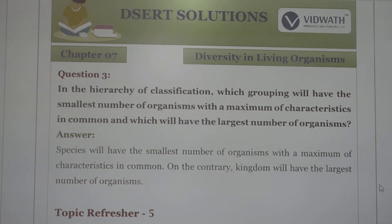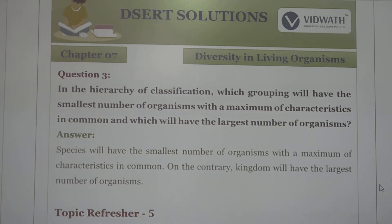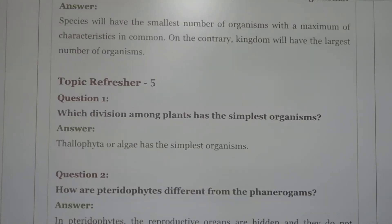Next question: in the hierarchy of classification, which grouping will have the smallest number of organisms with maximum characteristics in common, and which will have the largest number of organisms? Species will have the smallest number of organisms with maximum characteristics in common, while kingdom will have the largest number of organisms. The simplest organisms among plants belong to the division Thallophyta or Algae.